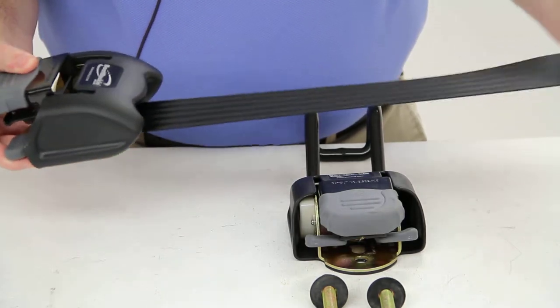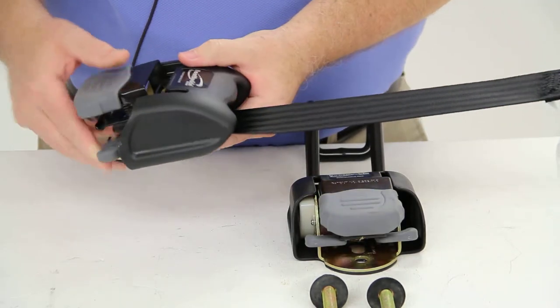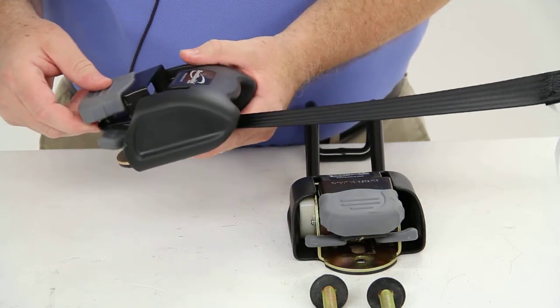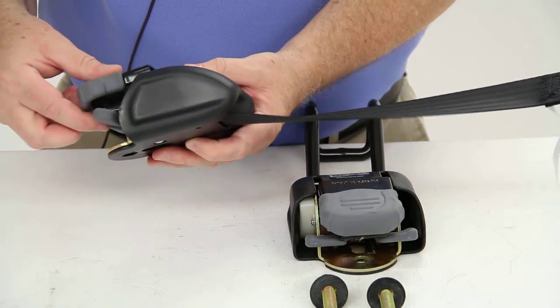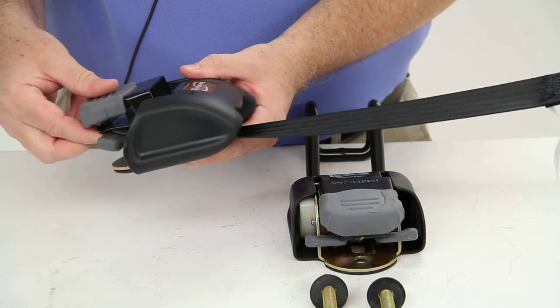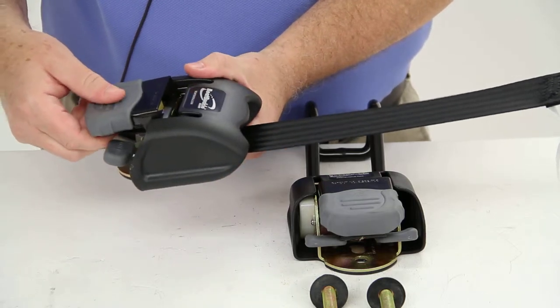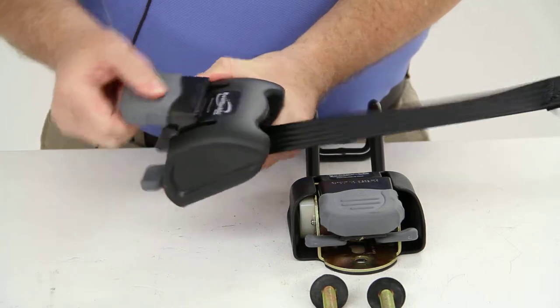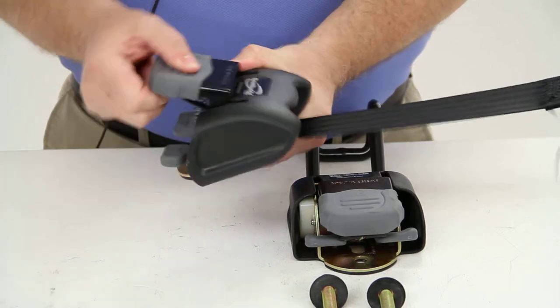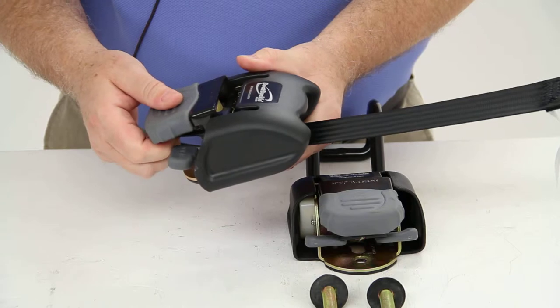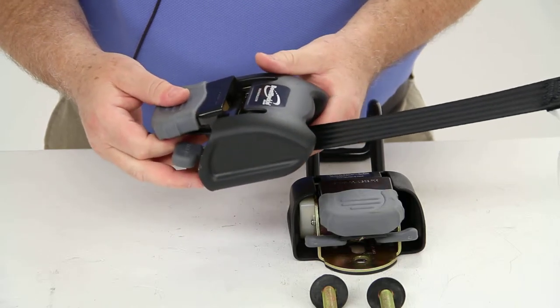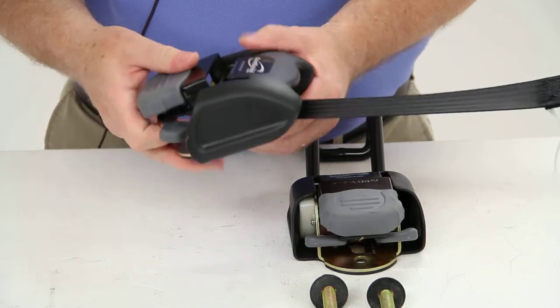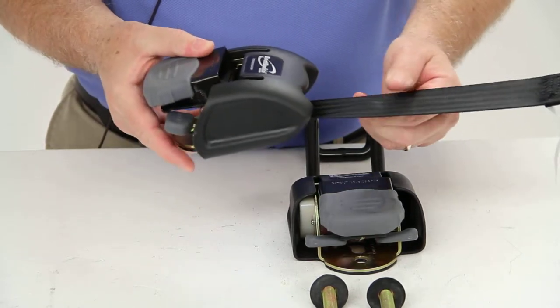And then once you have it hooked on, you just pull up on the lever, which will pop the release levers loose. And then there's a lever right under the handle, which when you pull up on that with the handle, it will allow you to ratchet up and tighten down the boat to your trailer frame. Once you leave off the handle, it will automatically be tightened.